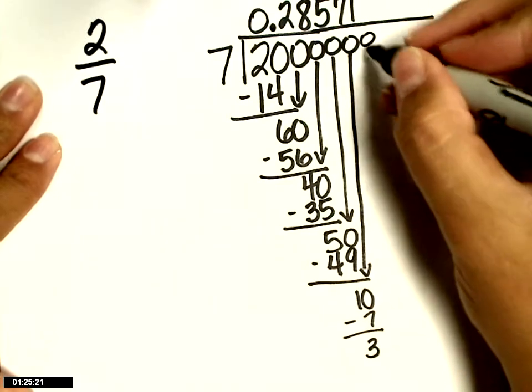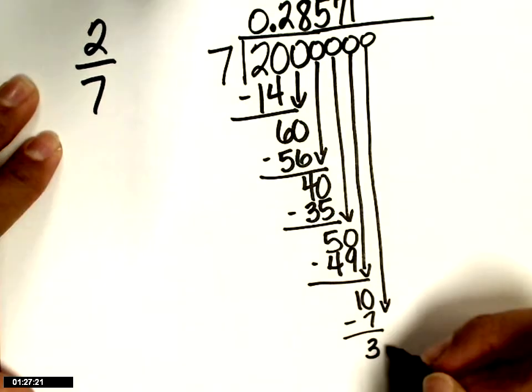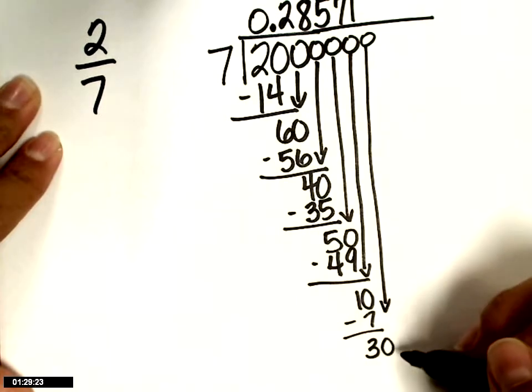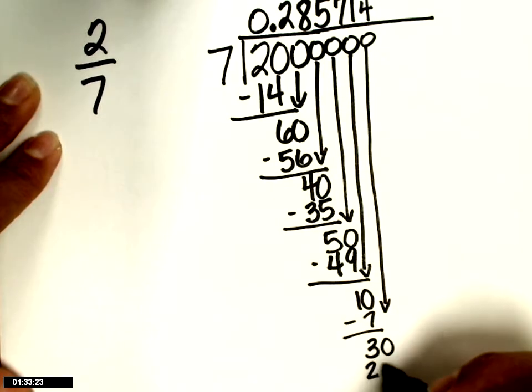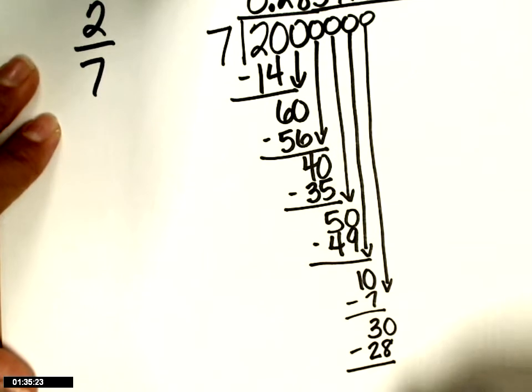Add another 0. Bring it down. 7 into 30? 4 times. 7 times 4 is 28. Subtract. 2.